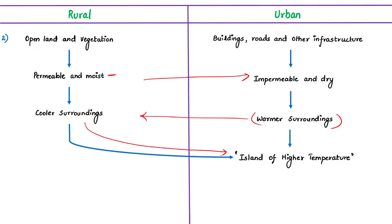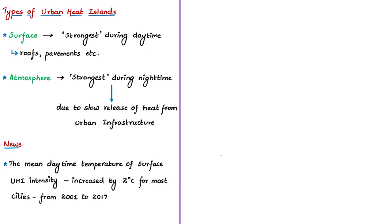Heat islands can occur on the surface and also in the atmosphere. Surface urban heat islands are typically present both during day and night, but tend to be strongest during the daytime when the sun is shining. Atmospheric urban heat islands are often weak during late mornings and throughout the day, becoming more pronounced after sunset. Studies show that the annual mean air temperature of a city with one million people or more can be 1 to 3 degrees Celsius warmer than its surroundings.